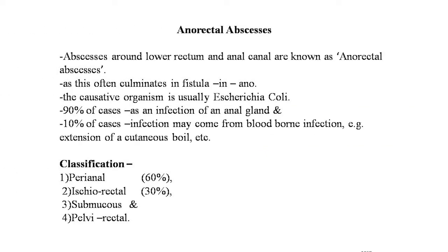Abscesses around the lower rectum and anal canal are known as anorectal abscesses. These are important as they often culminate in fistula in ano. The causative organism is usually E. coli, less commonly Staphylococcus aureus, Bacteroides, Streptococcus, and Proteus. In 90% of cases the abscess starts as infection of an anal gland; in the remaining 10%, infection may come from blood-borne infection or extension of cutaneous boils.